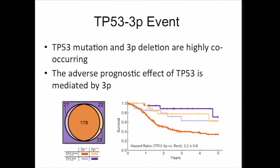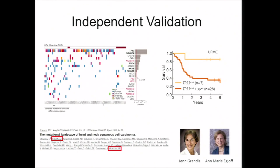Unfortunately, our TCGA cohort doesn't have updated clinical follow-up for the recent samples, but we were able to collaborate with John Grandis and Anne Aguloff at University of Pittsburgh. This is one of the early exome sequencing studies published in 2011, and since then they've kept really good clinical follow-up. We were able to recapitulate the finding that within P53-mutated patients, the addition of 3P loss does confer a worse prognosis.